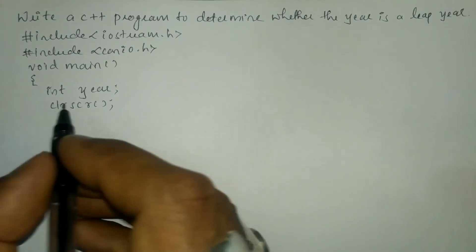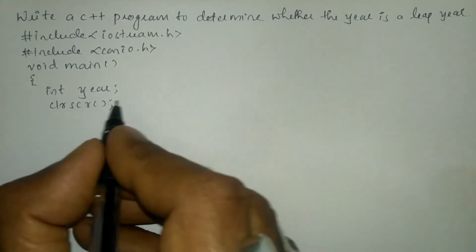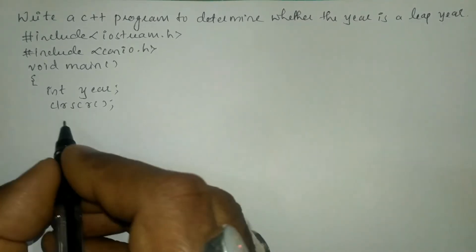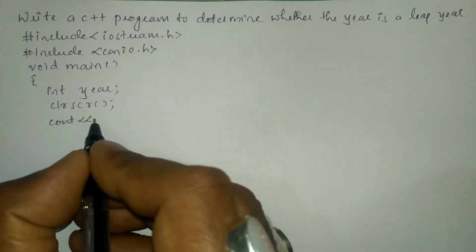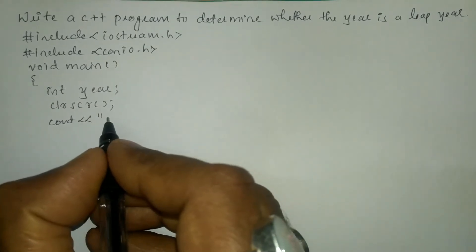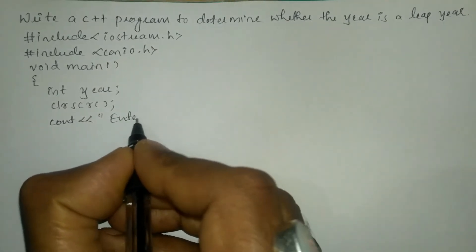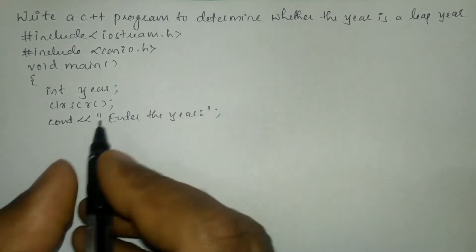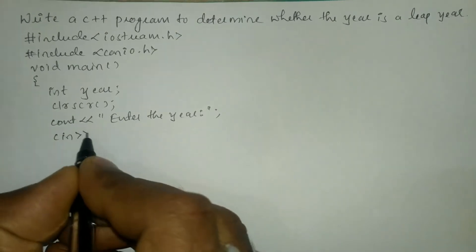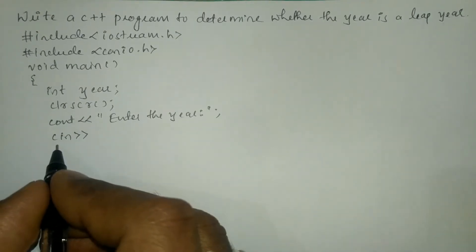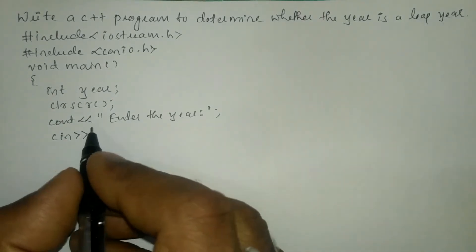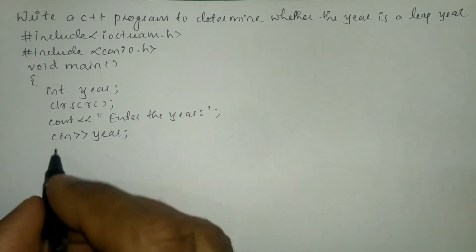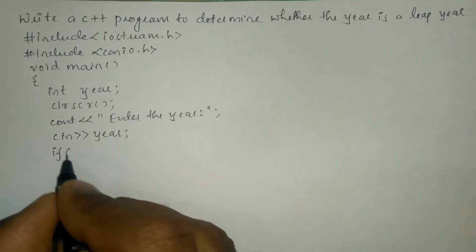After the declaration of variables we can write the clrscr() function, which is used to clear the screen — this is optional. Next, we will ask the user to enter the year using a cout statement: cout with stream insertion operator and in double quotation marks write 'Enter the year', then put a semicolon. We receive the input from the user through the keyboard using cin with the stream extraction operator and the variable year, then put a semicolon.